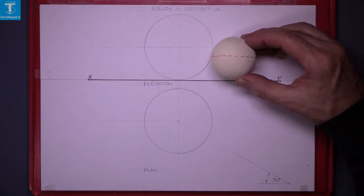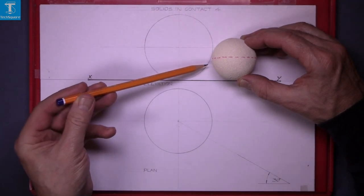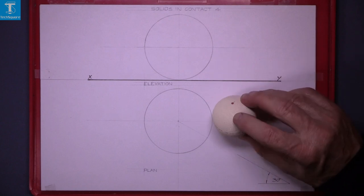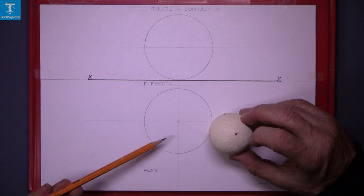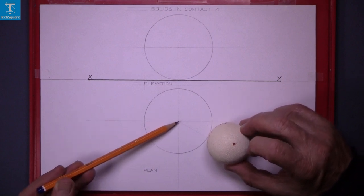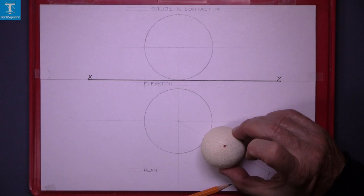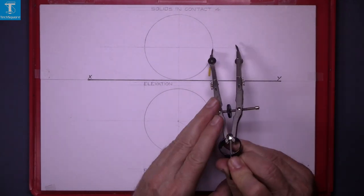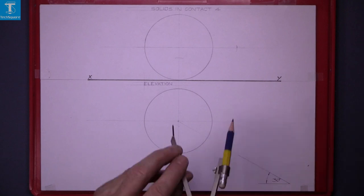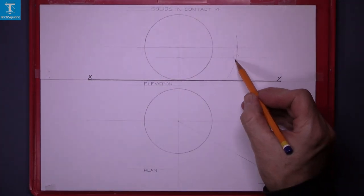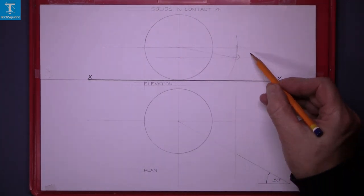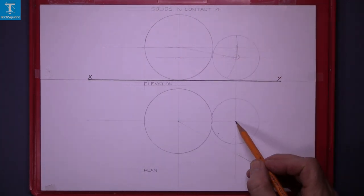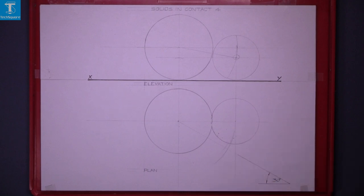To do that, position it in the elevation in contact with the sphere and in contact with the horizontal plane. Project it down, get the plan, and then rotate it using the center of the large sphere. Find the center for the sphere as you have done in Solids in Contact 2. Now draw the circle. Rotate the center around and that gets you the new location for the center.